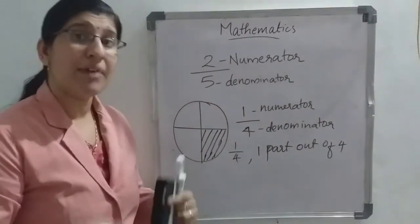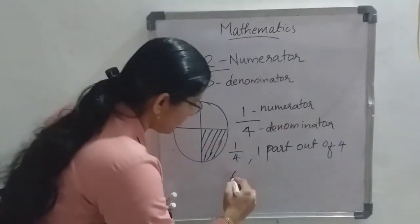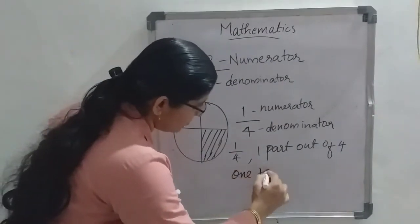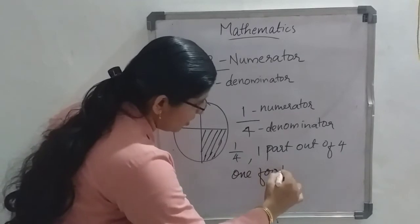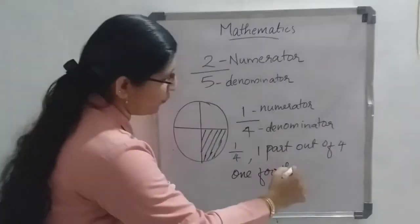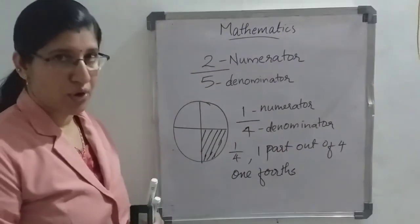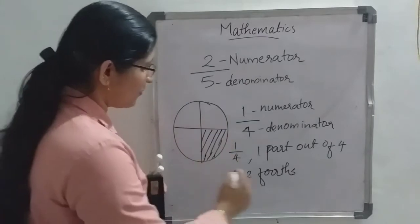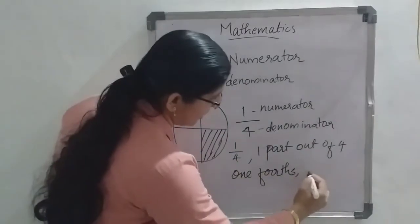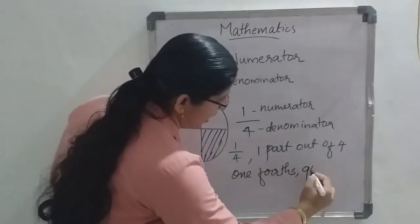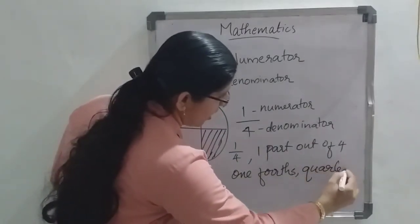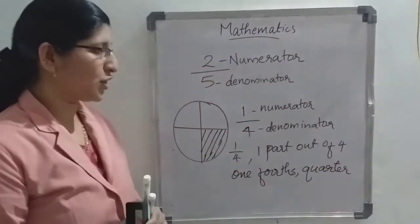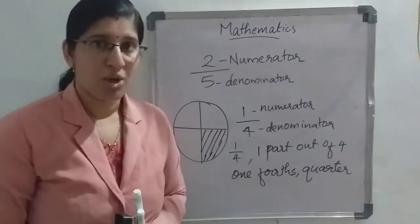We can also say '1 fourth.' And 1 fourth has another name — that is quarter. So 1 by 4 means quarter. For example, in a clock, whenever the needle stands at 3, we say 'quarter past.' That is the same idea — we will study it more in the time chapter.